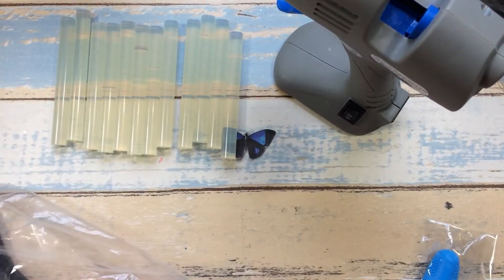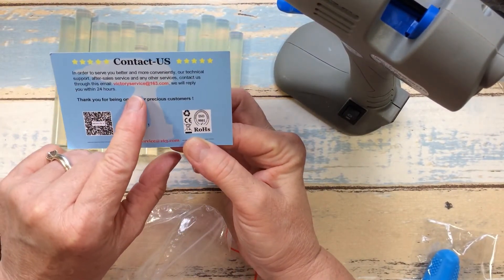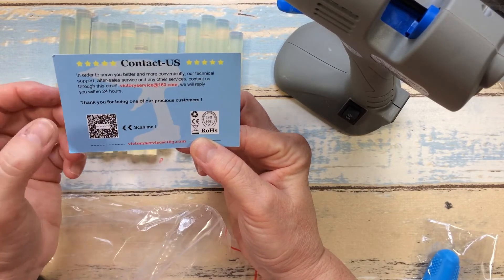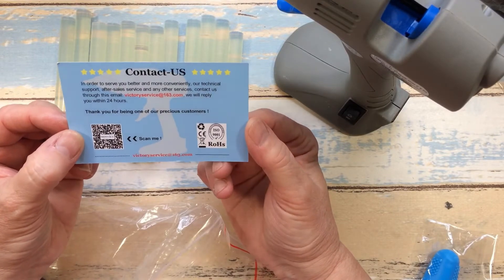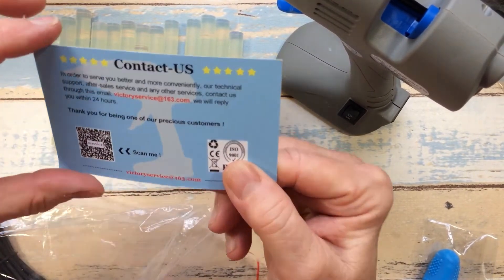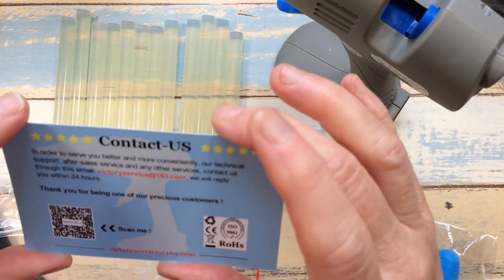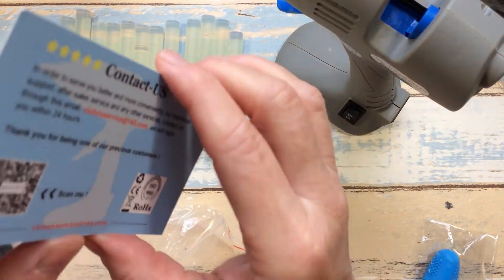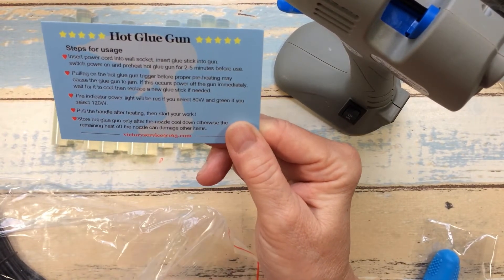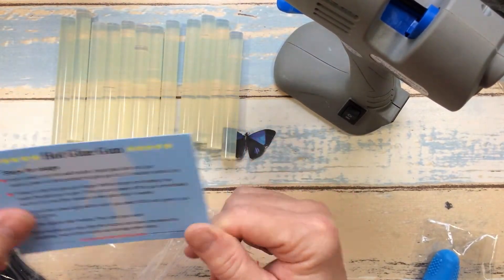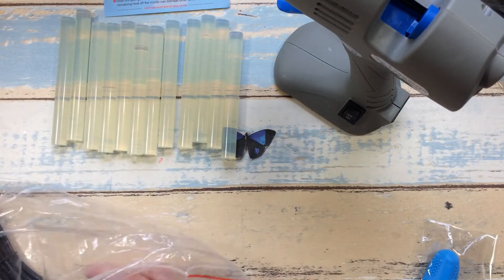And then along with this comes a card - it is their contact card. This is in order to service you better, more conveniently, with more technical support, after-sales service, and any other service. Contact us through this email and they give their email. It says we will reply within 24 hours. Thank you for being one of our precious customers. And then on this side it's just the glue gun usage and the steps how to use their glue gun.